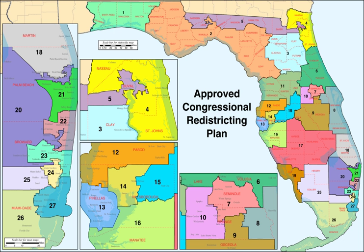List of members of the Floridian United States House delegation, their terms in office, district boundaries, and the district political ratings according to the CPVI. The delegation has a total of 27 members, including 16 Republicans and 11 Democrats.